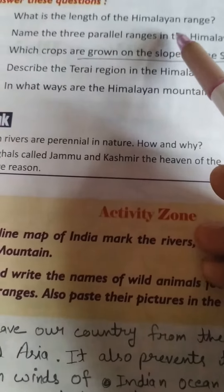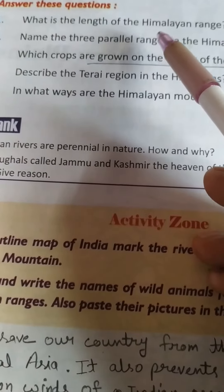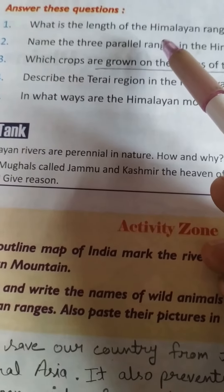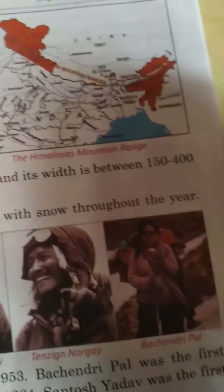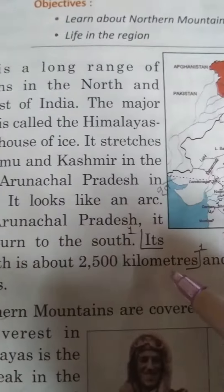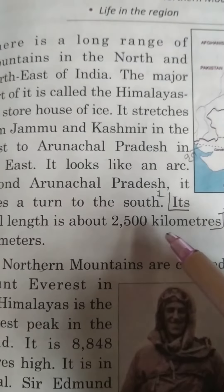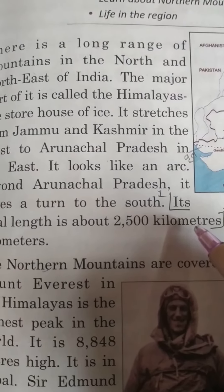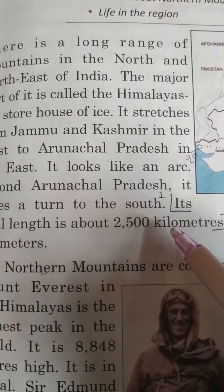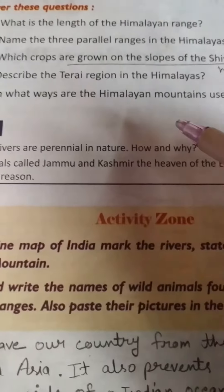What is the length of the Himalayan range? Himalayan length ki lambai kitni hai? The answer is on page number 11. Here its length is about 2500 km. So the answer is: the length of the Himalayan range is 2500 km.